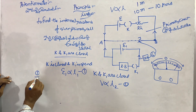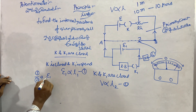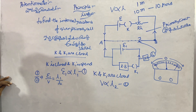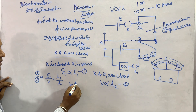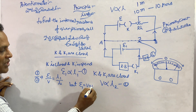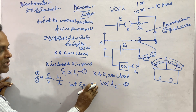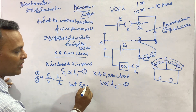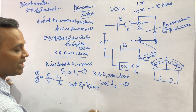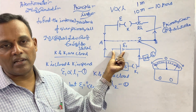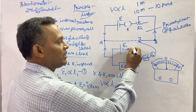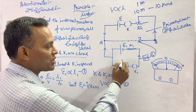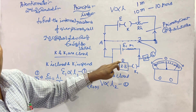From these two proportionalities, E1 by V is equal to L1 by L2. But E1 is equal to V plus IR. So substituting, we get the relation involving the internal resistance r and external resistance R.